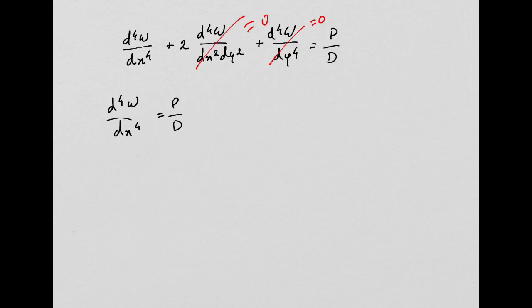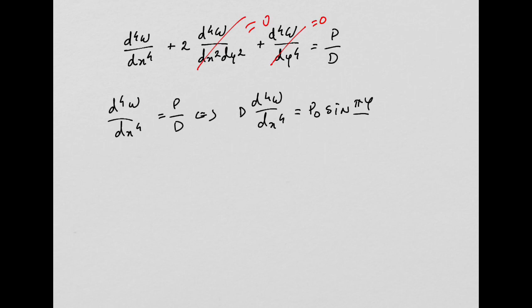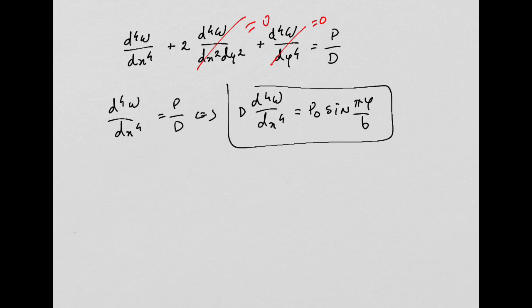We replaced P with the loading, sent it to the left-hand side, and got this form. The next step was to integrate this equation four times. We introduced boundary conditions and ended up with this final equation for deflection. We did this last week — I'm just making a smooth connection from last week to this week.